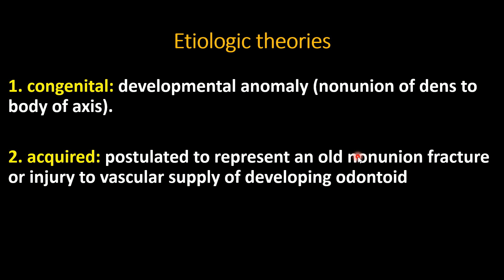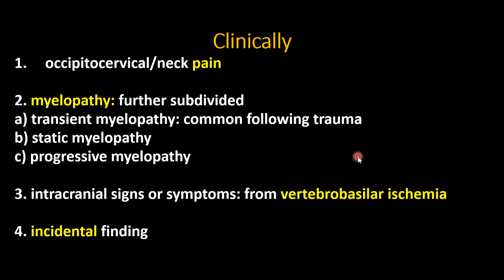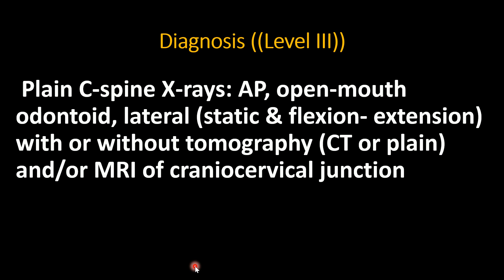Etiologic theories include congenital or acquired causes, with trauma — specifically neglected old trauma causing non-union of fracture — as the acquired theory. Clinically, it can present with pain or myelopathy; myelopathy may be transient, static, or progressive, or there may be signs of vertebrobasilar ischemia, or it may be discovered incidentally. Diagnosis is made with plain cervical spine X-rays (AP, open mouth, lateral static and flexion-extension) with or without CT or MRI.